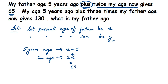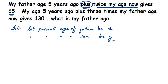So the first equation is: X minus 5 plus 2Y equals 65. Let me write this down properly — five years ago the father's age was X minus 5, plus twice the son's present age which is 2Y, and when added that gives us 65. This is our first equation.